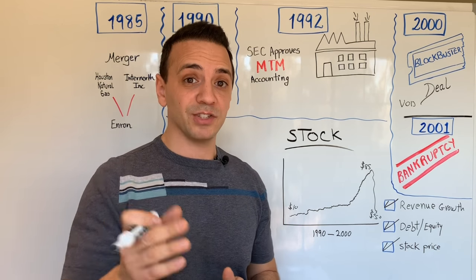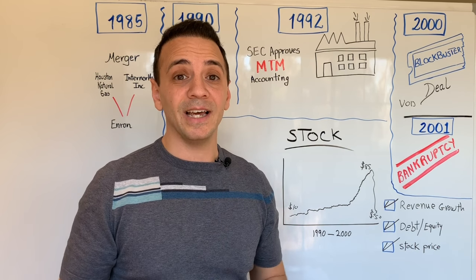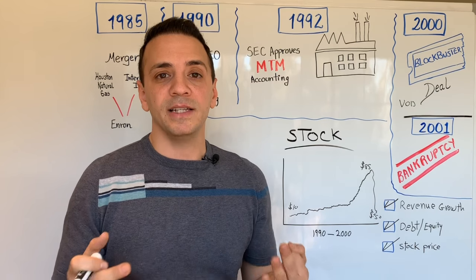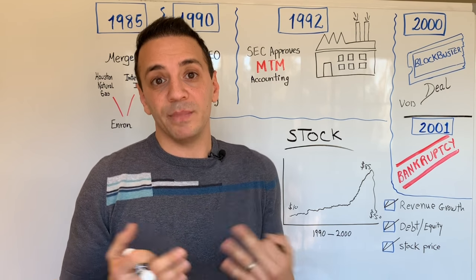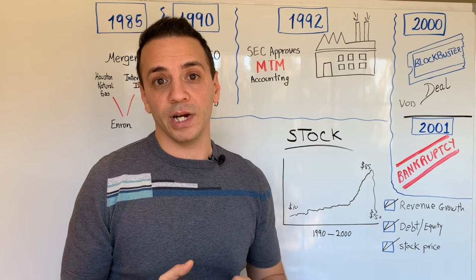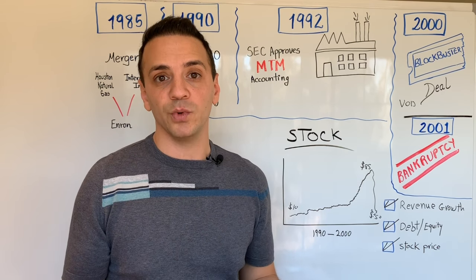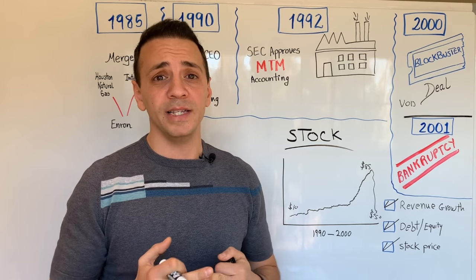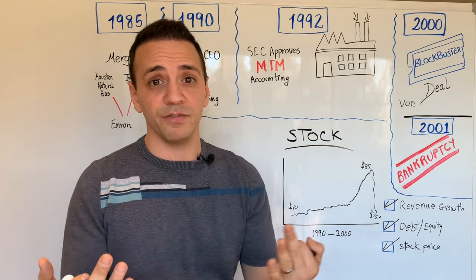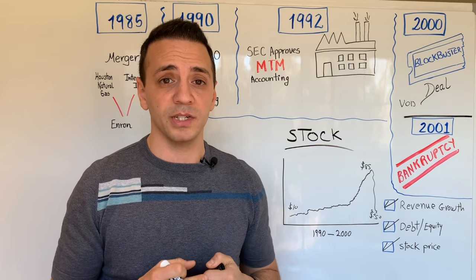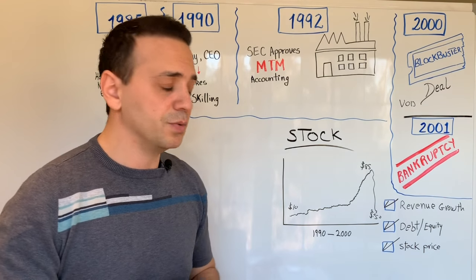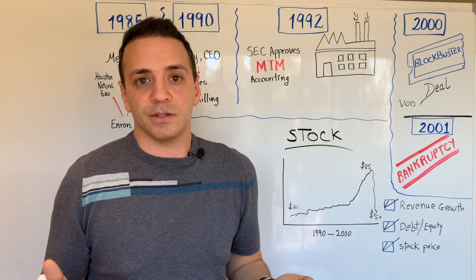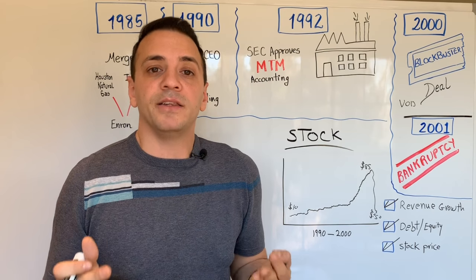Jeff Skilling got out of jail in 2019 and, surprisingly, he's back in business. He said that during his jail time he came up with a business plan for an energy software business. It's amazing — I'm not sure how he'll be able to get back into the business or if anyone is going to trust him, but that's the latest news.